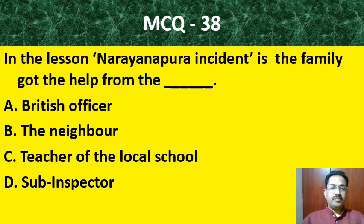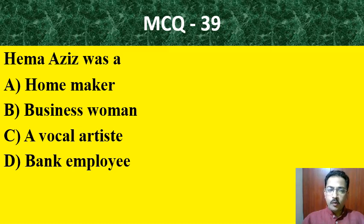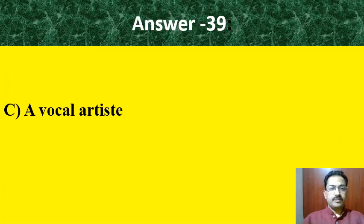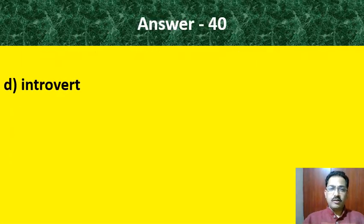MCQ question number 36: The musical instrument mentioned in the poem 'Jazz Poem Two' is saxophone. MCQ question 37: The pitiful things in the poem 'Song of India' — option A: pilgrims' worn-out faces; option C: helpless children. The correct answer is helpless children. MCQ question number 38: In the lesson 'Narayanpura Incident,' the family got help from — British officer, the neighbor, teacher of the local school, or sub-inspector. The correct answer is sub-inspector. MCQ 39: Emma Aziz was — a homemaker, businesswoman, vocal artist, or bank employee. She was a vocal artist at Akashvani All India Radio. MCQ 40: Hanif had no friends till 14 years of age because — he was talkative, extrovert, naughty, or introvert. The correct answer is he was an introvert.